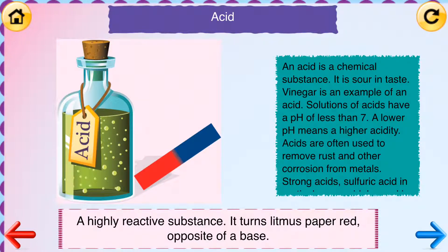Acid is a highly reactive substance. It turns litmus paper red, opposite of a base. An acid is a chemical substance that is sour in taste. Vinegar is an example of an acid. Solutions of acid have a pH of less than 7; a lower pH means a higher acidity.